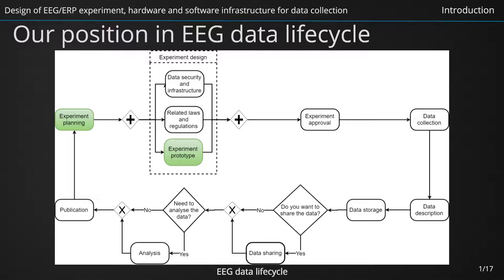In our neuroinformatics group, we have been developing the hardware and software infrastructure for research in EEG and ERP techniques, and this infrastructure is built independently of the specific EEG or ERP experiment. In the planning phase, we have to decide what hardware and software infrastructure will be used for collecting, storing and managing data, which data formats and metadata terms are suitable for data description, or if there is a necessity to purchase, develop, or integrate any new or updated hardware device or software tool.